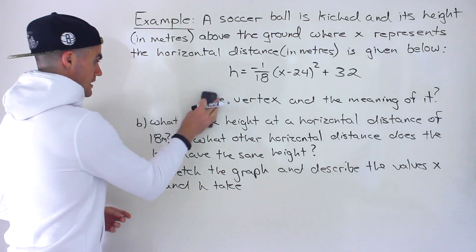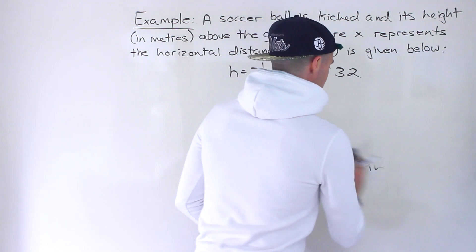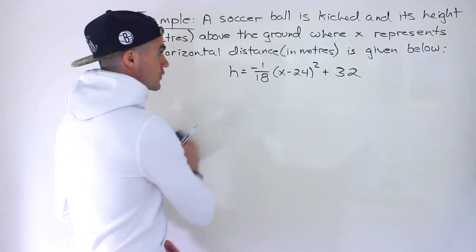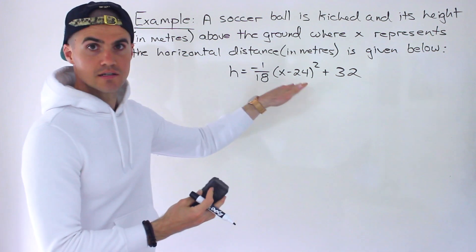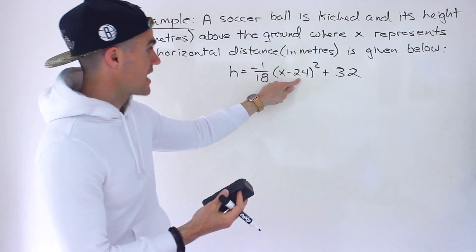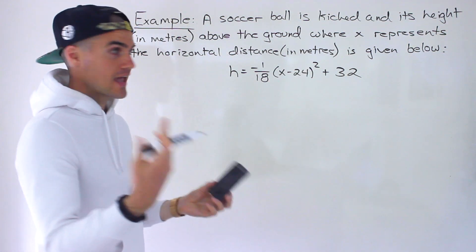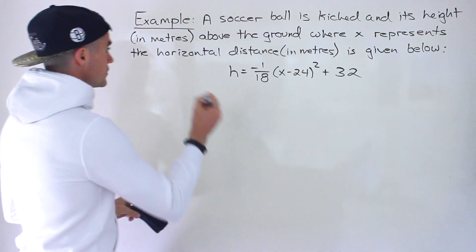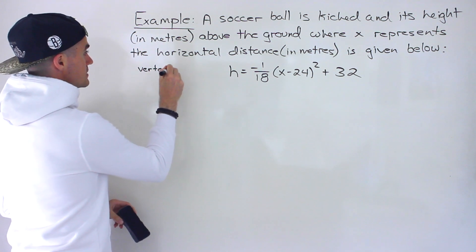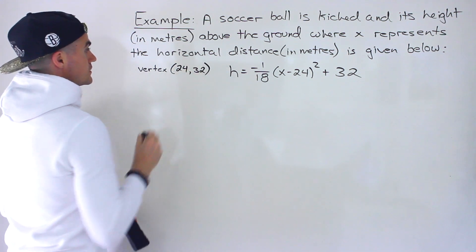Let's start off with the vertex. That's easy to get because it's already in vertex form — we have a(x minus h) squared plus k — and we know the vertex is always the h and k value. So in this case, the vertex is (24, 32).